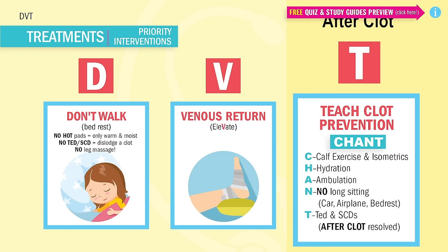I already know tests are going to give you scenarios about a patient on a long flight or a long car ride complaining of pain to the calf or one-sided leg swelling — and guys, it's a DVT. Always expect them to have respiratory problems, and that's a huge lung clot. Lastly, T is for TEDs and SCDs — this is only for after clots are resolved. This helps move blood back up to the heart, stopping the stasis of blood where it stays just in the legs.